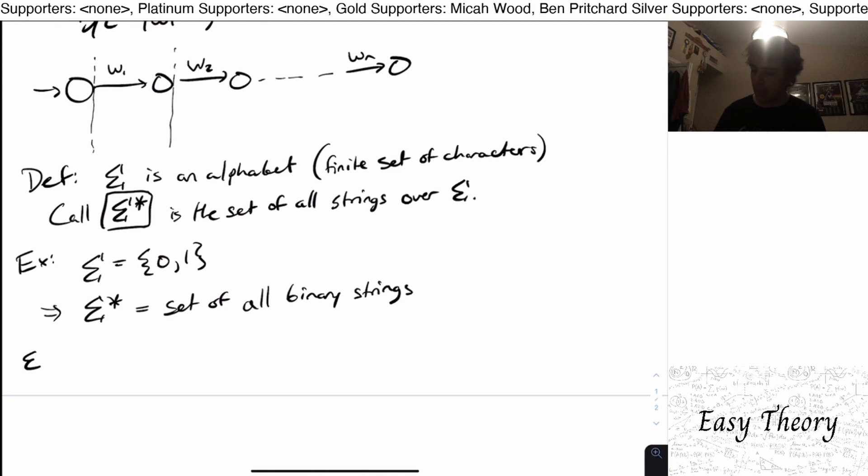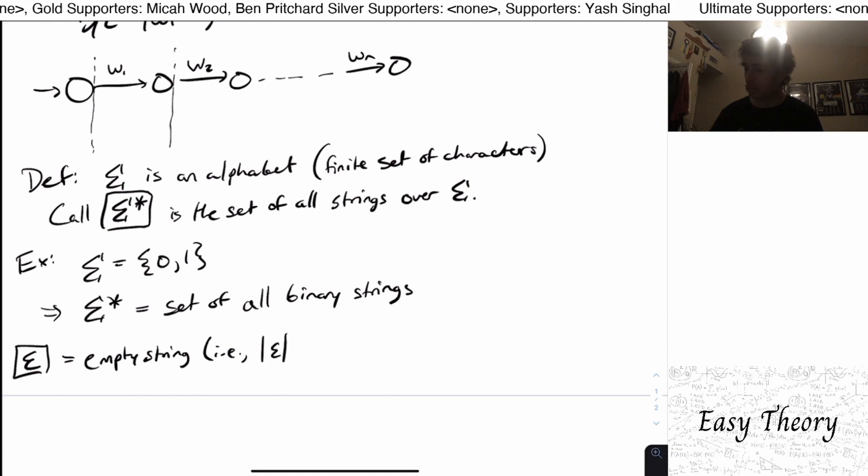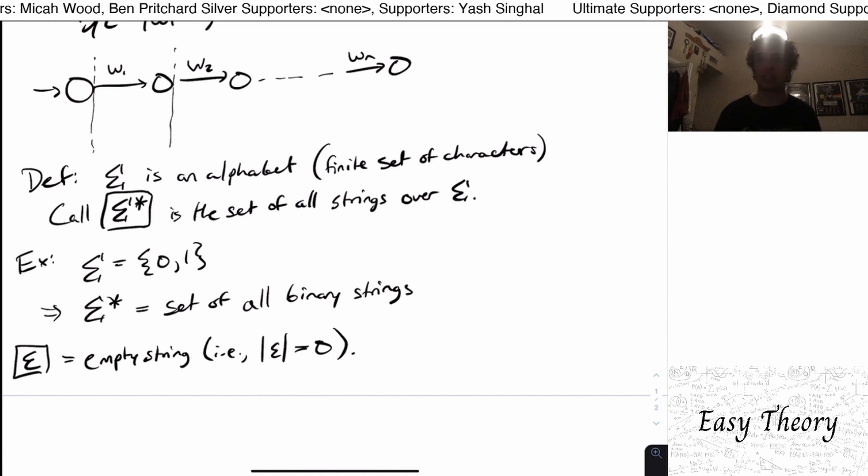And that's another thing. So we're going to call epsilon right here, we're going to call this the empty string. And what does empty mean here? It means the length of that string is zero, there's no characters in it. And we come across the empty string all the time in this class and in programming in general anyway.